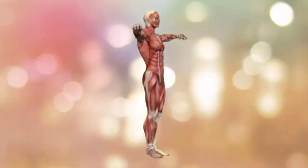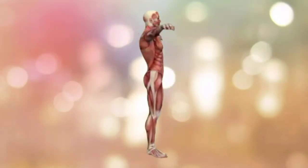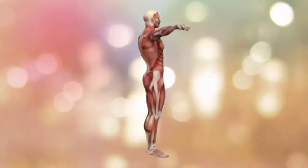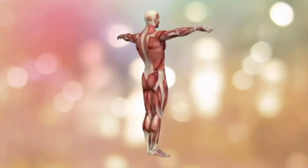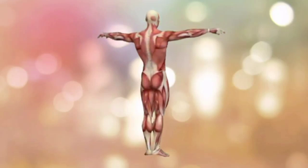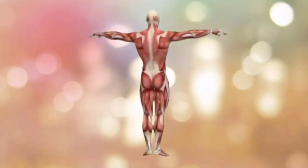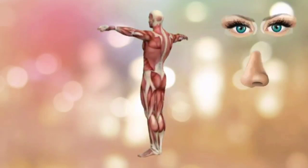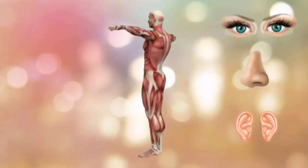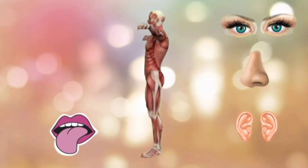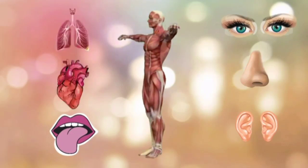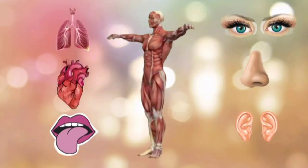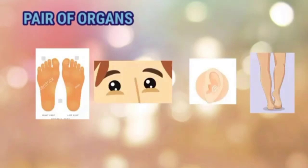It is more complicated than any computer. Our body is made up of hundreds of different parts — for example, eyes, nose, ears, tongue, heart, lungs, etc. Our body parts often come in pairs.